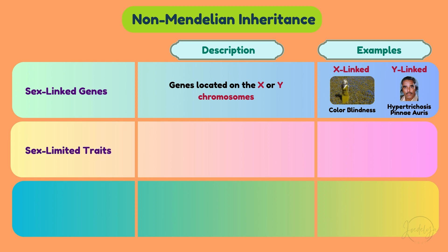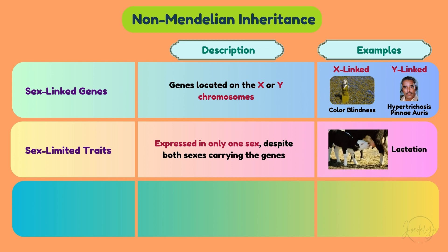Sex-limited traits are traits expressed in only one sex, despite both sexes carrying the genes. These traits are often regulated by hormonal differences. An example is lactation in cattle, which is dominant in females but never expressed in males due to hormonal differences.